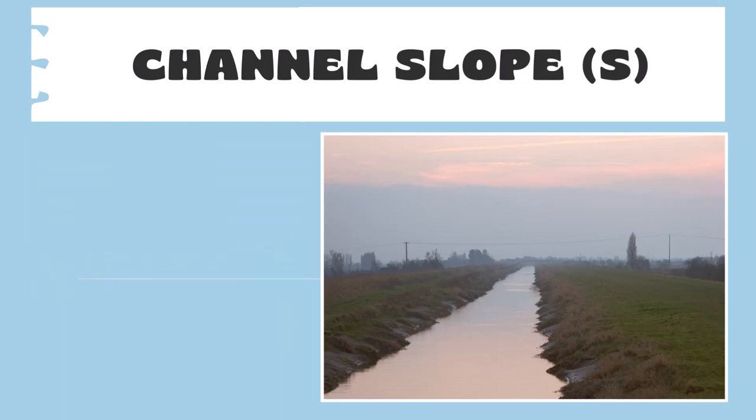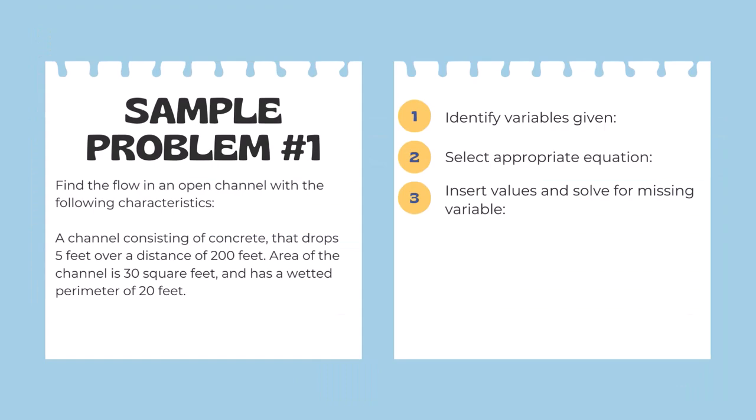Now that we understand the variables, let's actually solve a problem. Find the flow in an open channel with the following characteristics: a channel consisting of concrete that drops five feet over a distance of 200 feet, area of the channel is 30 square feet and has a wetted perimeter of 20 feet. So the first thing we have to do is identify the variables given, select the appropriate equation, and insert values and solve for the missing variable.